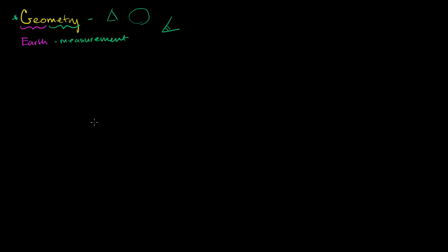Now with that out of the way, let's just start from the basics — a basic starting point for geometry — and then we can grow from there. So if we just start at a dot, that dot right over there, it's just a point. We literally call that a point, and I'll call that a definition. The fun thing about mathematics is that you can make definitions. We could have called this an armadillo, but we decided to call this a point, which makes sense because it's what we would call it in everyday language as well.